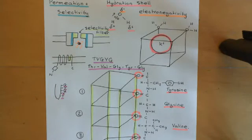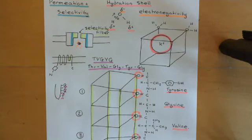Welcome back to this next video in which we are discussing voltage-gated ion channels. We're currently discussing voltage-gated potassium channels, and specifically how it is that once the voltage-gated potassium channel has opened — because there has been a depolarisation in the electrical potential difference across the cell membrane — how do potassium ions actually move through the voltage-gated potassium channel?